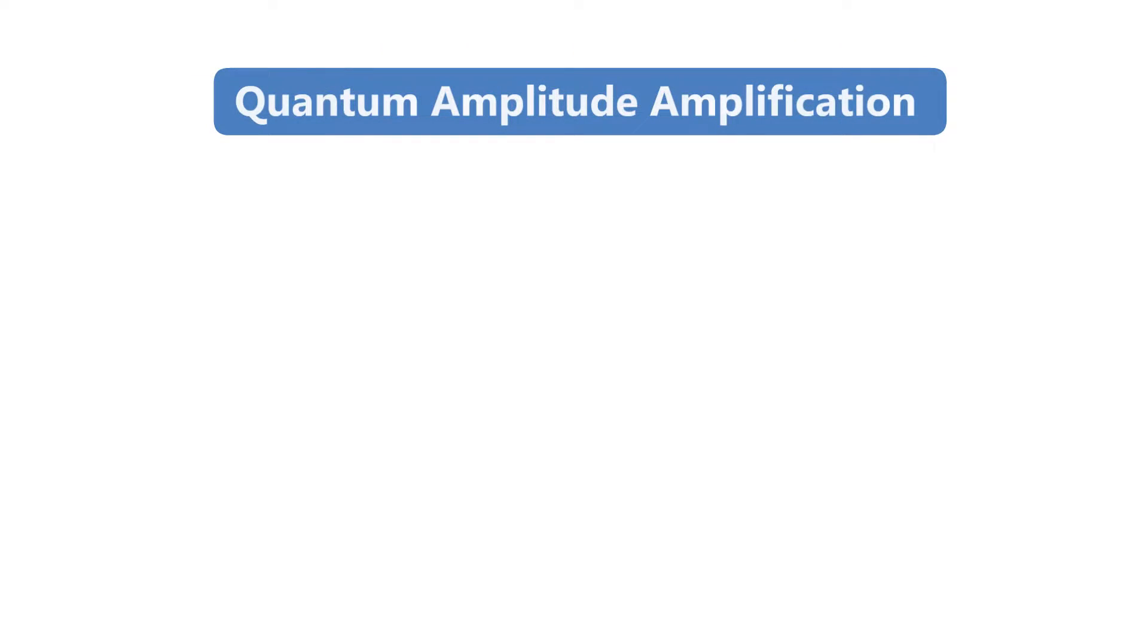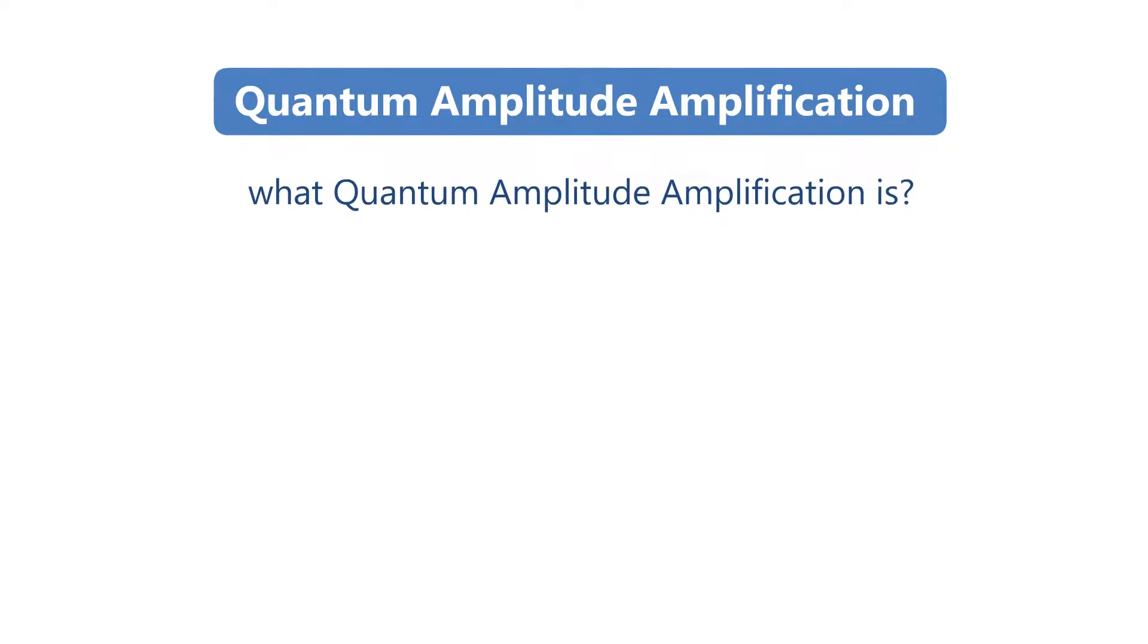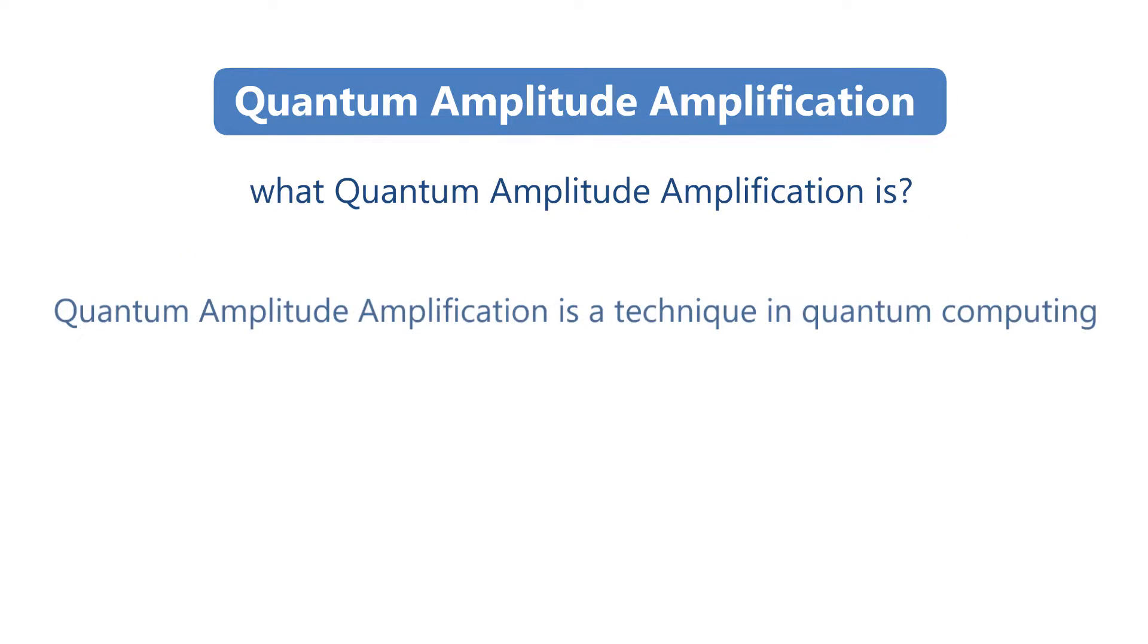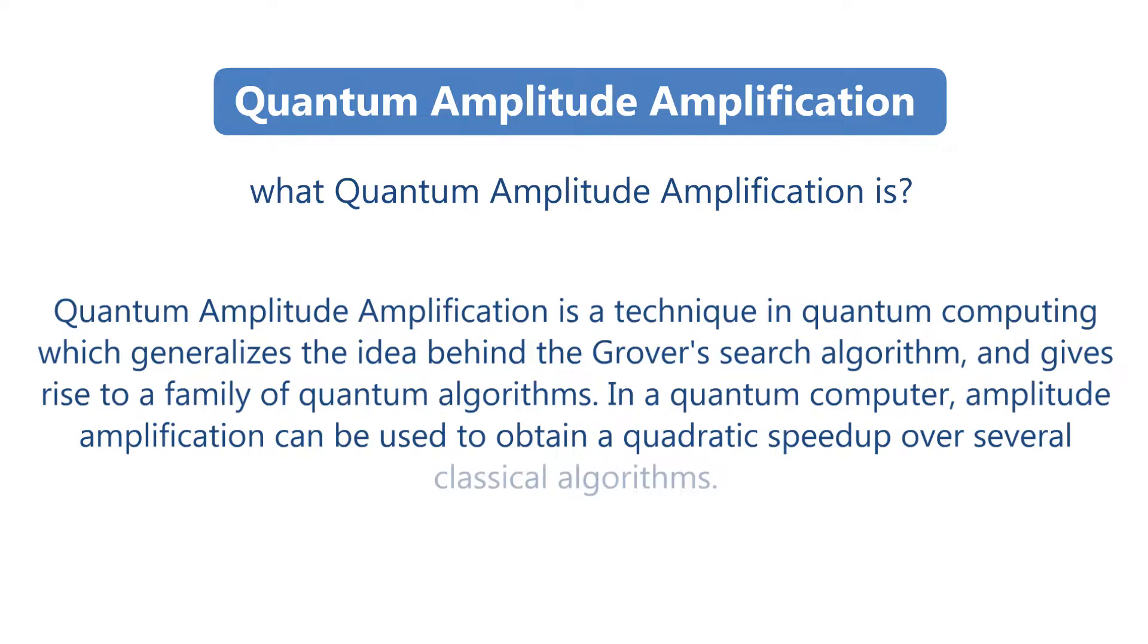So now let us start with quantum amplitude amplification. Firstly, let's know what quantum amplitude amplification is. Quantum amplitude amplification is a technique in quantum computing which generalizes the idea behind Grover's search algorithm and gives rise to a family of quantum algorithms. In a quantum computer, amplitude amplification can be used to obtain a quadratic speed up over several classical algorithms.